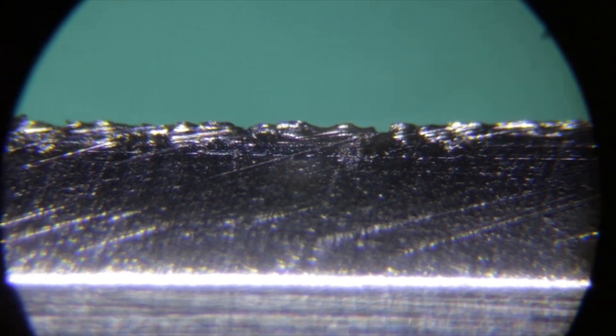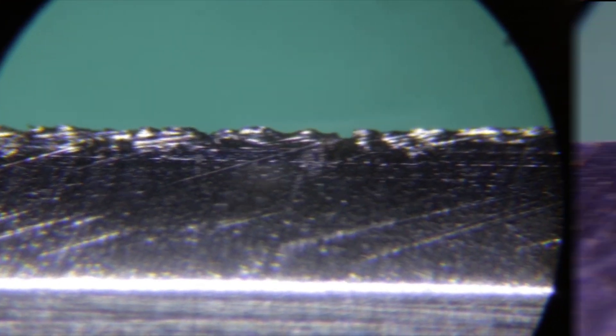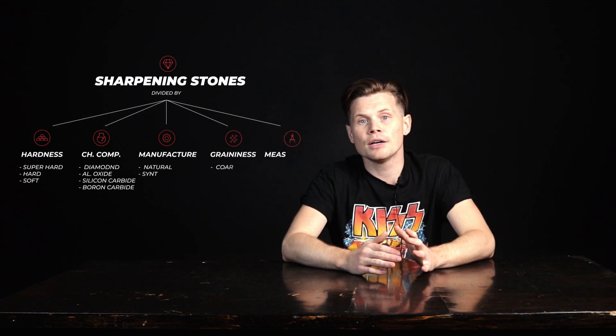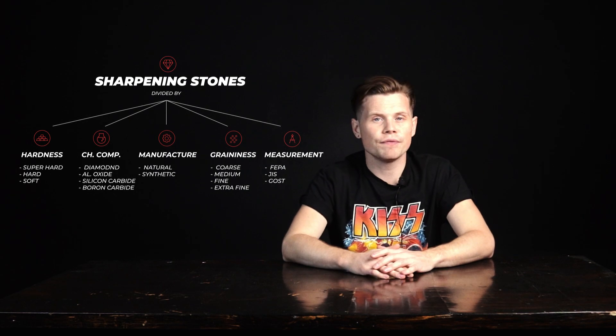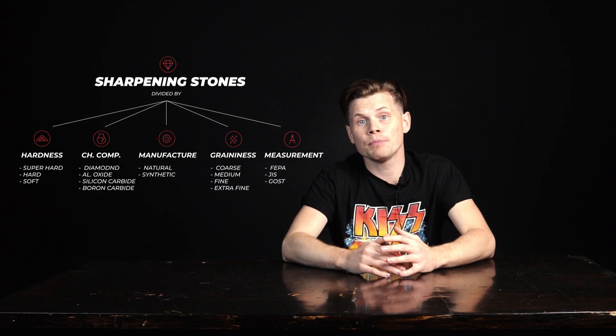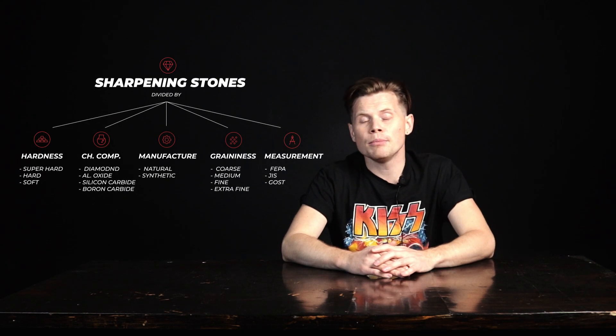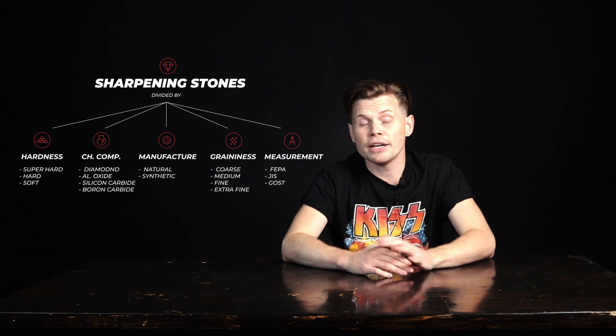Abrasives are substances of high hardness which are used for processing various surfaces. They are used in shaping or finishing a workpiece by friction, which results in the removal of the surface layer of the material from the processed area. They are divided by hardness — super hard, hard, and soft — by chemical composition, either natural or synthetic, as well as by the size of the grinding grit: coarse, medium, fine, and extra fine.